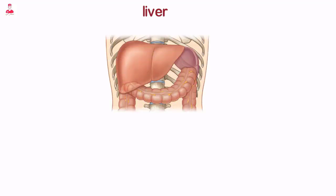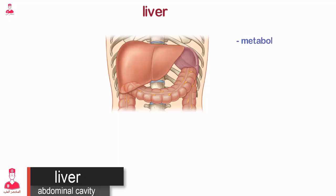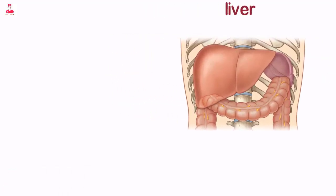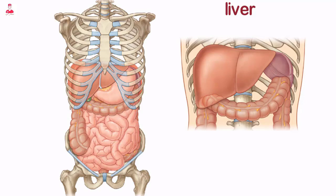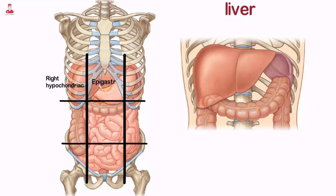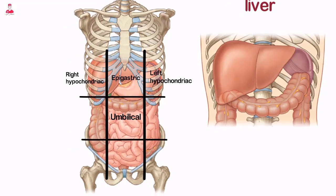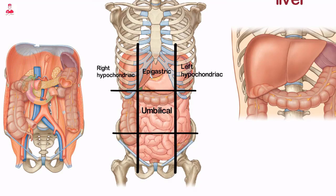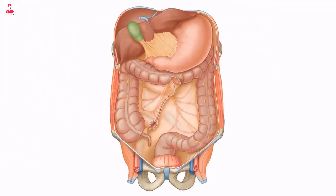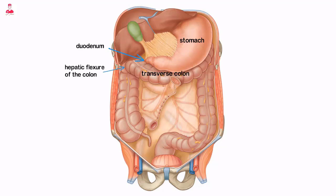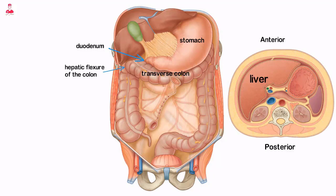The liver is a large complex organ with numerous functions which include metabolic and hematologic regulation and bile production. It is the largest organ of the abdomen, occupying a major portion of the right hypochondriac and epigastric regions, sometimes extending into the left hypochondriac and umbilical regions. The liver is bordered superiorly, laterally, and anteriorly by the right hemidiaphragm; the medial surface is bordered by the stomach, duodenum, and transverse colon; the inferior surface by the hepatic flexure of the colon; and the posterior surface by the right kidney.